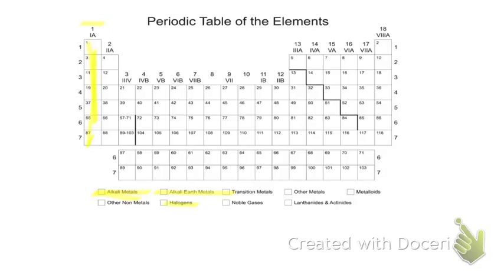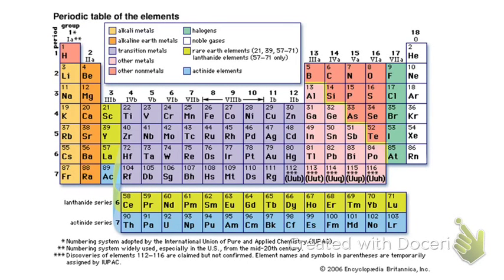Group two are known as the alkali earth metals. And so you would color all those in a different color, and so forth. So on this next slide here, I actually have it color coded for you. So you can use something very similar to this idea.